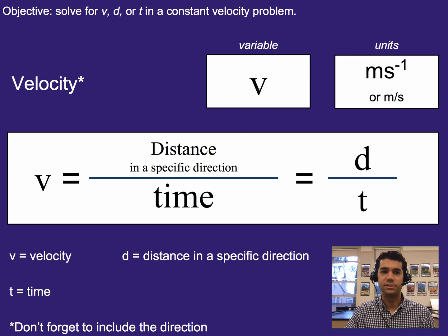The variable is, again, going to be v. We will still use meters per second, but don't forget to include the directions in it. The formula is going to be distance in a specific direction divided by time. So, d divided by t still.